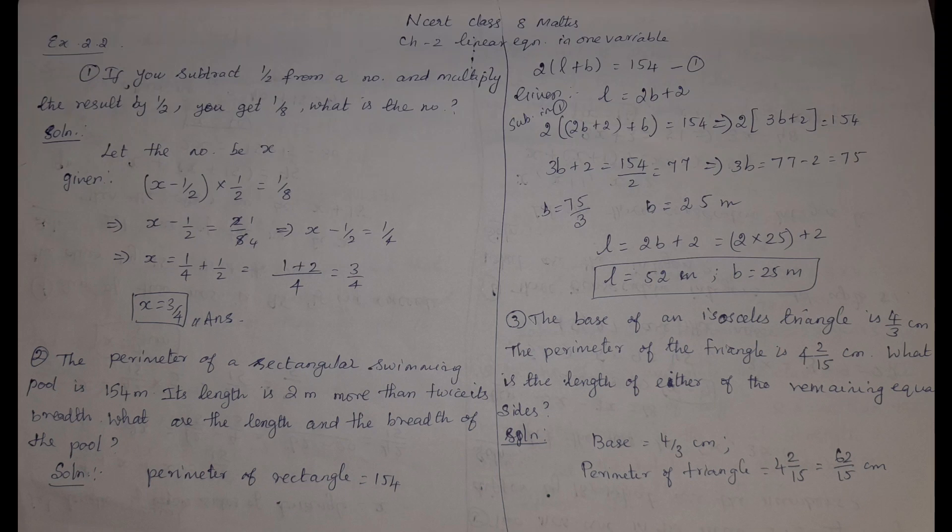Welcome to everyone. In the next video, NCRT Class 8 Maths Chapter 2 Linear Equation in One Variable Word Problems, Exercise 2.2. First problem: if you subtract half from a number and multiply the result by 1/2, you get 1/8. What is the number?